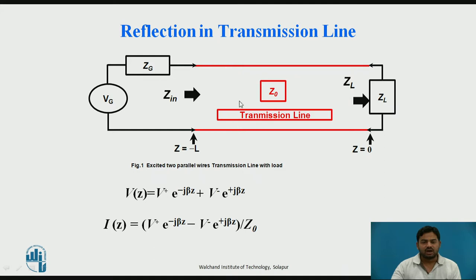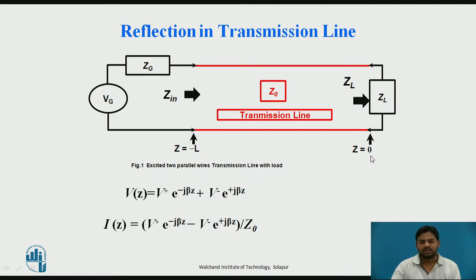These red lines represent the transmission line. This is a generator, mostly in the case of sinusoidal signals, and this is the generator resistance, which is complex. This is a complex load. This is the line of length L. Please note that the reference is taken at the side where z is equal to zero, starting from the load side, not from the generator side. So this is your generator side and this is your load side.